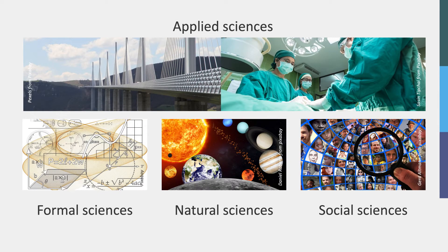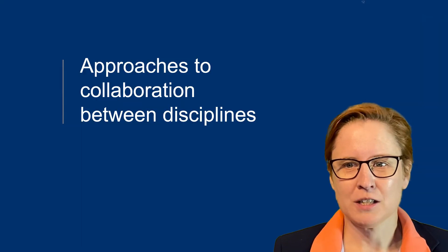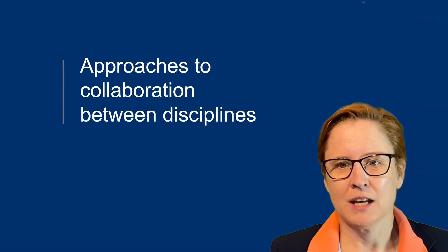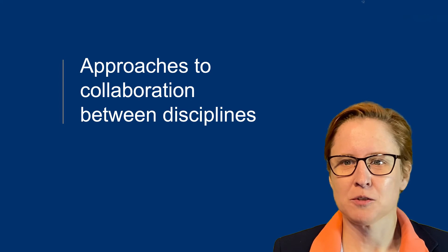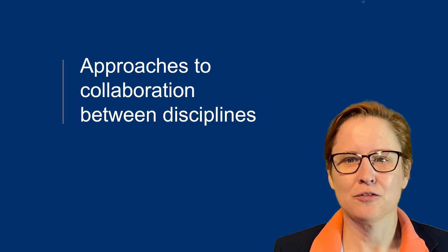These fields do, to a certain extent, depend on each other. Outcomes of the formal sciences, such as mathematical theorems, are used in the other three sciences. Applied science even makes use of all three other fields. With the complexity of knowledge and need for solutions increasing, scientists from different disciplines increasingly have to work together to find solutions and answers.